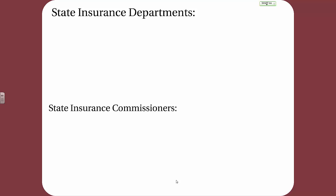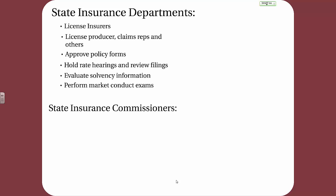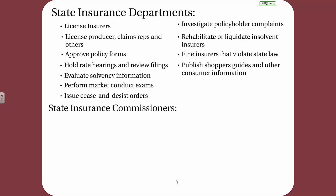State insurance departments, which work for and under state insurance commissioners, are responsible for licensing insurers, licensing producers, claims representatives, and sometimes others; approving policy forms; holding rate hearings and reviewing rate filings; evaluating solvency information; performing market conduct exams; issuing cease and desist orders when necessary; investigating policyholder complaints; rehabilitating or liquidating insolvent insurers; finding insurers that violate state law; publishing shopper's guides and other consumer information; and conducting financial and market examinations of insurers, which occur on-site every three to five years for an insurer domiciled in the state.